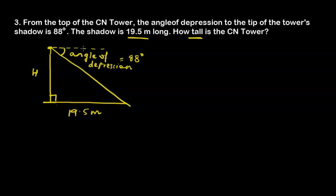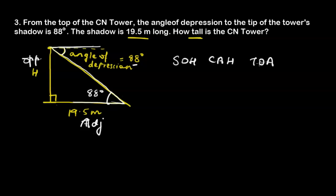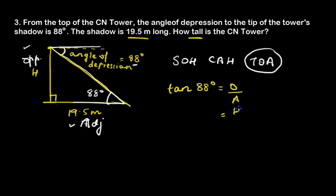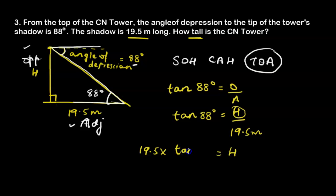To use the triangle, we need the 88-degree angle inside it. Since the top of the tower and the ground are parallel, a Z-pattern forms, making the interior angle also 88 degrees. For this angle, the height is opposite and the shadow is adjacent. Opposite and adjacent use the tan ratio, so we write tan 88° = opposite over adjacent = h ÷ 19.5. Isolating height: h = 19.5 × tan 88° = 558.4 meters.